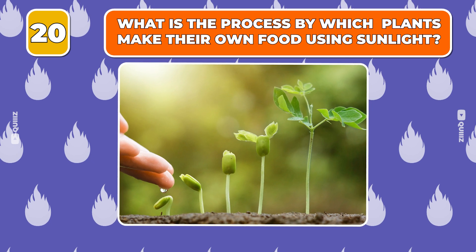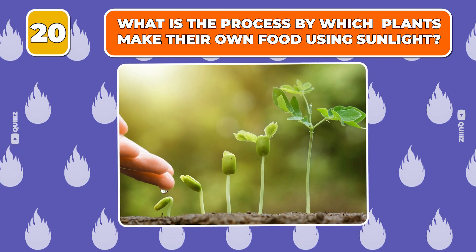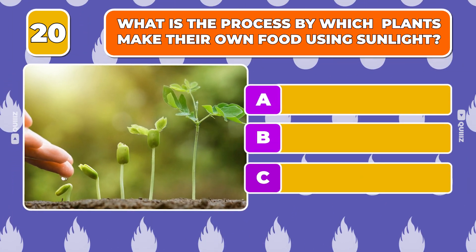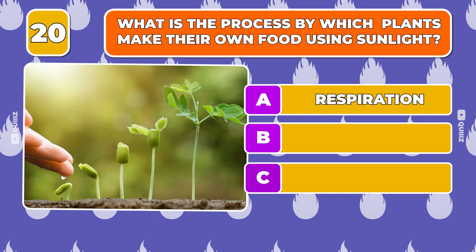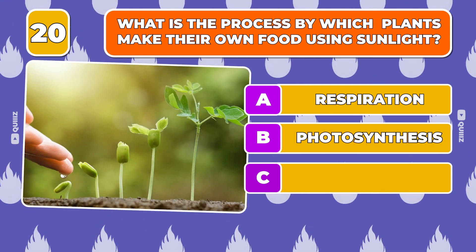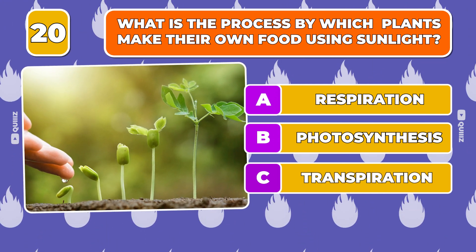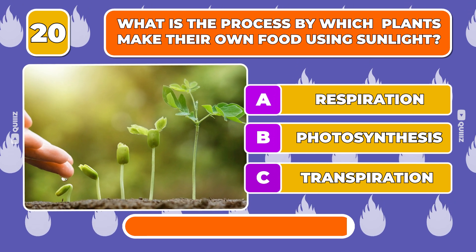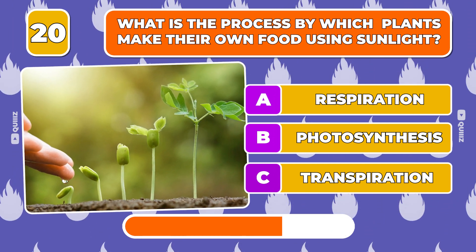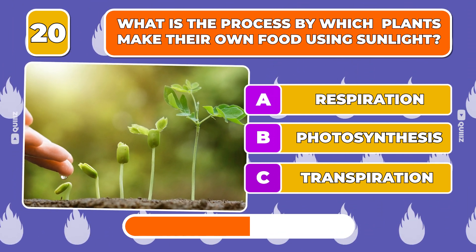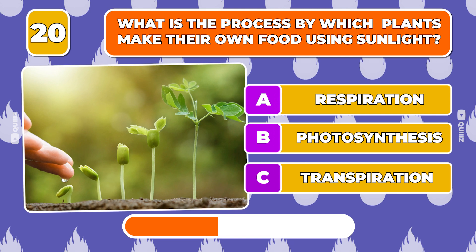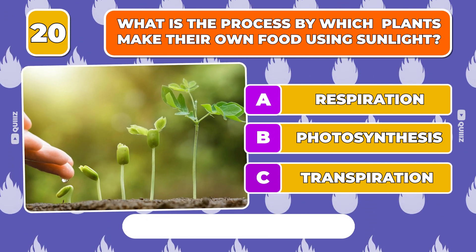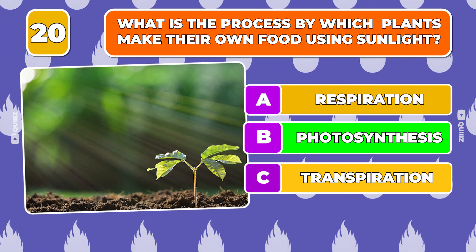Question 20. What is the process by which plants make their own food using sunlight? Respiration, Photosynthesis, Transpiration. The answer is photosynthesis.